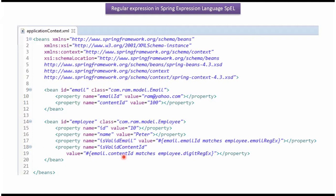If the contentId value of the Email object, which is 100, matches the digit regular expression of the Employee object, then the isValidContent property value of the Employee object will be set as true, else it will be set as false.